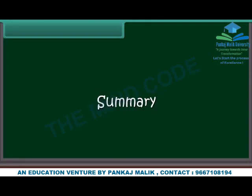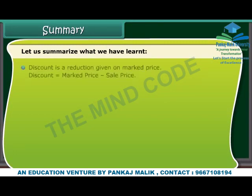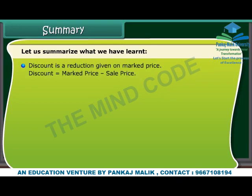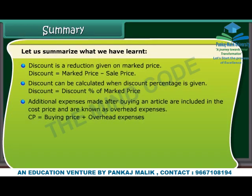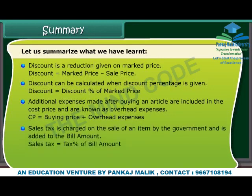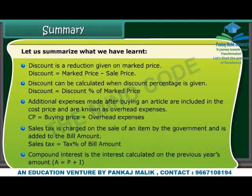Summary. Let us summarize what we have learned. Discount is a reduction given on the marked price. Discount equals marked price minus sale price. Discount can be calculated when the discount percentage is given: Discount equals discount percentage of marked price. Additional expenses made after buying an article are included in the cost price and are known as overhead expenses. CP equals buying price plus overhead expenses. Sales tax is charged on the sale of an item by the government and is added to the bill amount. Sales tax equals tax percentage of bill amount. Compound interest is the interest calculated on the previous year's amount, where A equals P plus I.